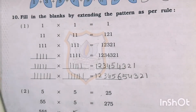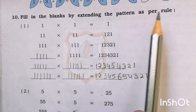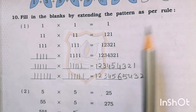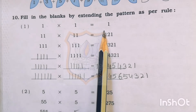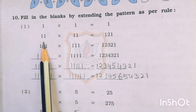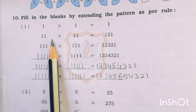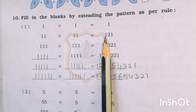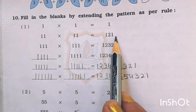Question number 10: fill in the blanks by extending the pattern as per rule. Here also, we have to extend the pattern as per the rule. 1 multiplied by 1 is 1. Then we take 2 times 1: 11 multiplied by 11. So the answer is 121. Here, both sides we have to write 1.